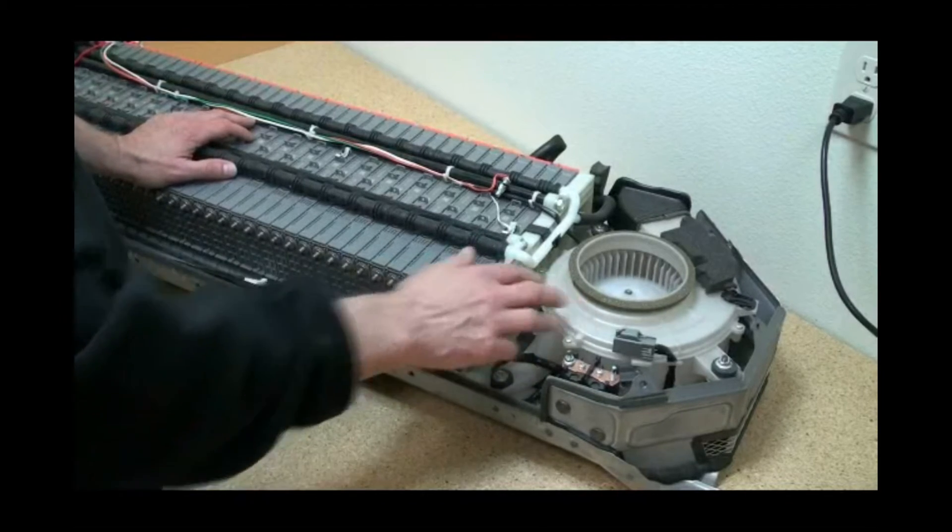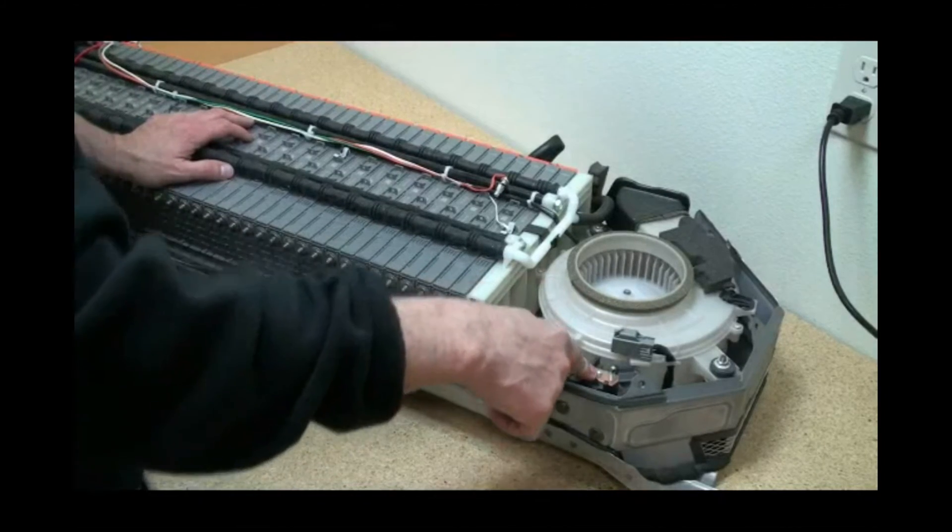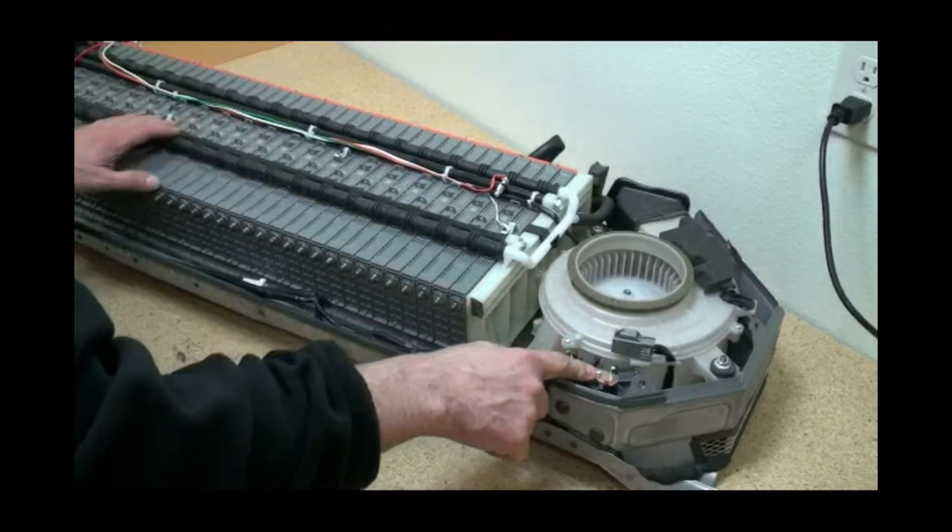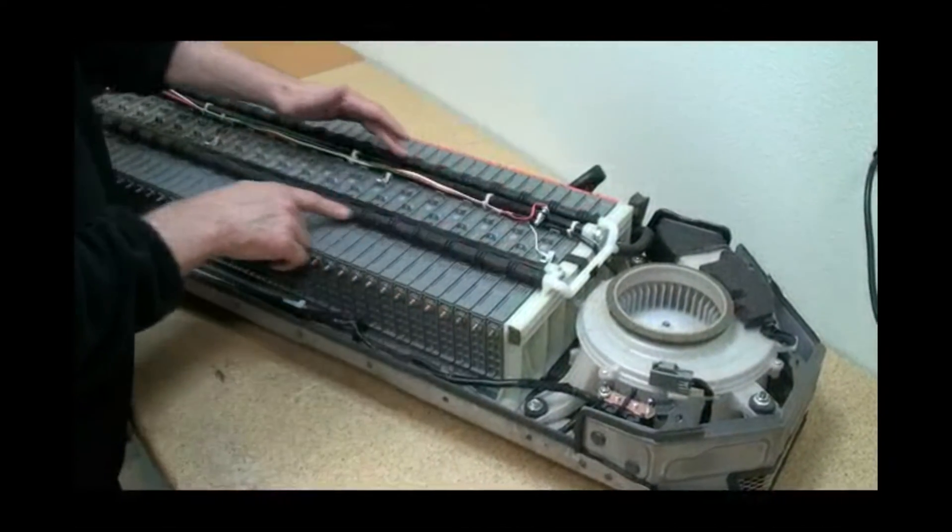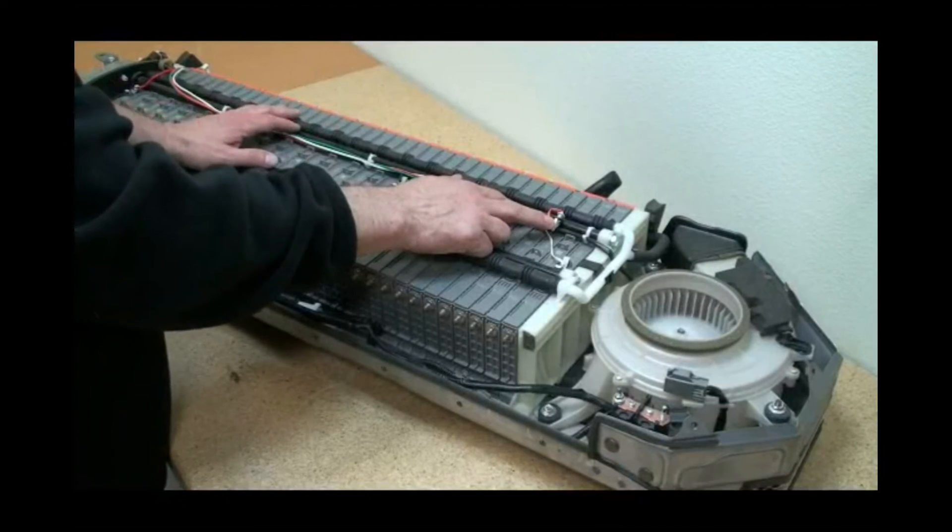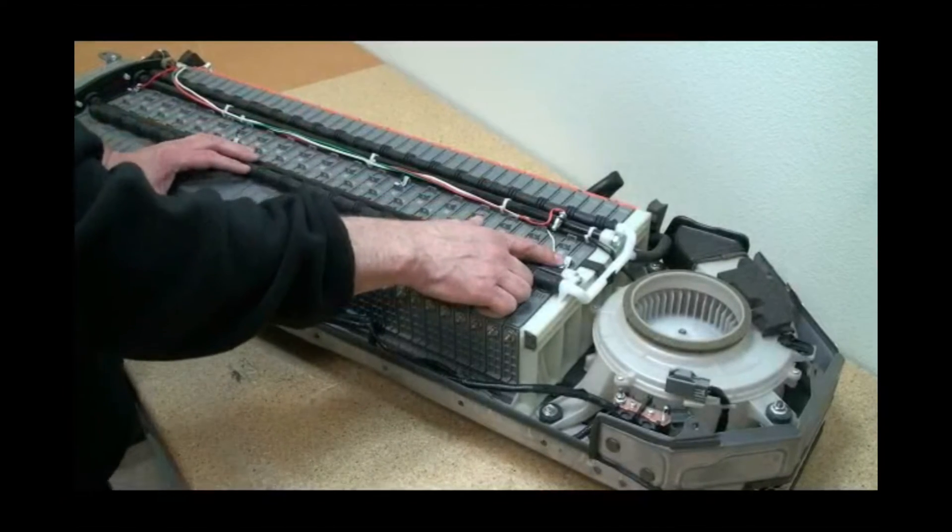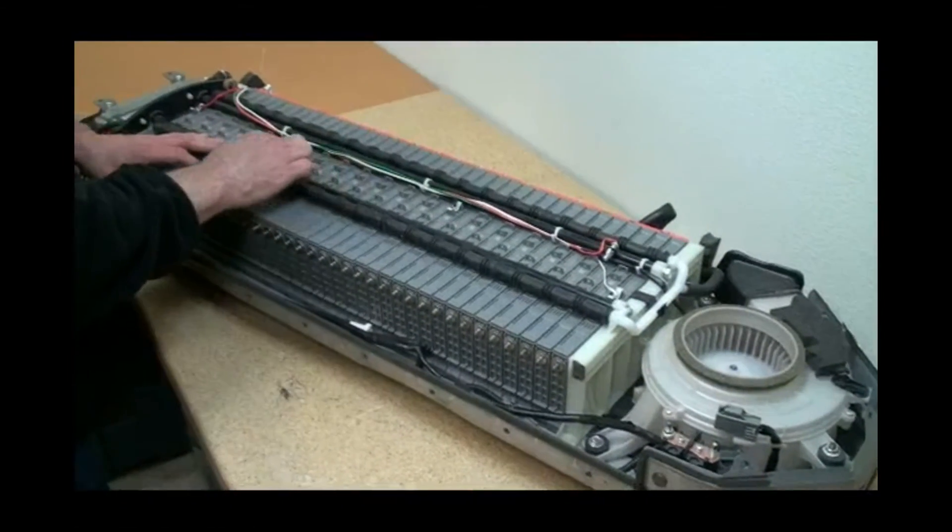Right over here, this is the negative contactor, which is located on the right side of the battery pack. As we move down, we can see that we have the battery modules here. Here are the vent tubes. This is the air temperature sensor, so this would sense the incoming air temp. As we move down, you can see that we have the temp sensors on the battery modules.